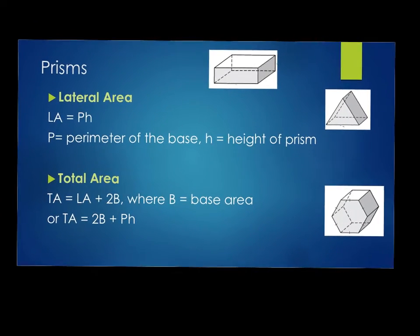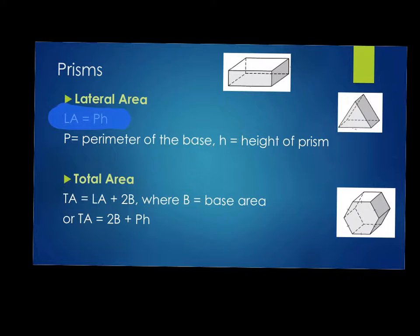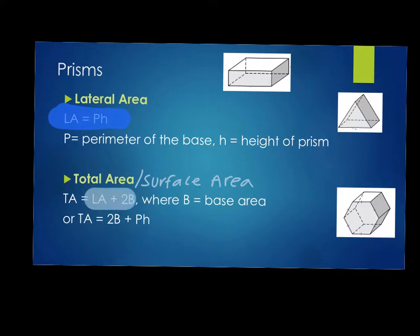Prisms have two bases and lateral faces that connect those bases. A rectangular prism, a triangular prism, and a hexagonal prism are shown. The formula for the lateral area of a prism is perimeter of the base times the height: LA = Ph. Total area, or surface area — those two are used interchangeably — is 2B plus Ph, because Ph is the same as lateral area.